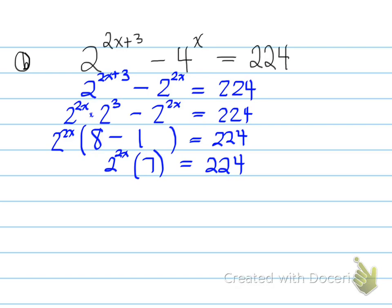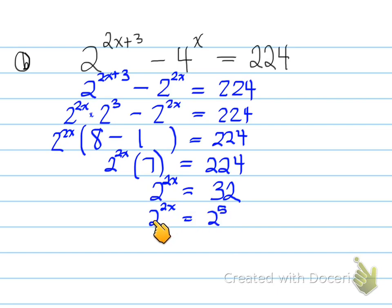2^(2x) times 7 equals 224. Dividing by 7 gives 2^(2x) equals 32, which is 2^5. Since the bases are equal, we drop them: 2x equals 5, therefore x equals 2.5 or 5/2. Both forms are acceptable as exact answers.